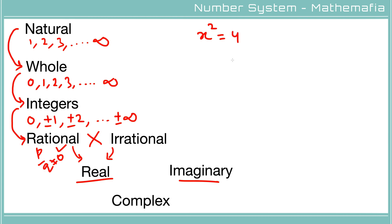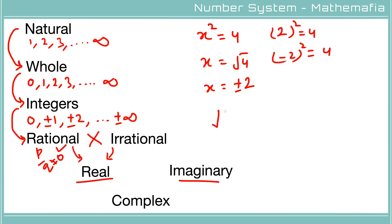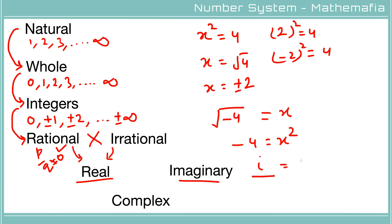Now let's talk about imaginary numbers. If x² = 4, then x = ±2, because the square of 2 is 4 and the square of minus 2 is also 4. But what if we need to calculate the square root of minus 4? That would mean there is some number x whose square is a negative number. We don't have this in real numbers, because no real number squared gives a negative result. So such a number must be an imaginary number.